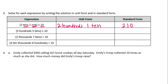Five hundreds and five tens times ten: hundreds times ten makes it five thousands, and tens times ten makes that five hundreds. So we have five thousand five hundred.